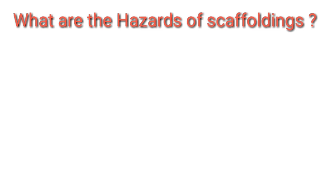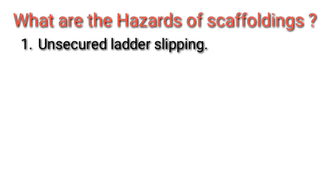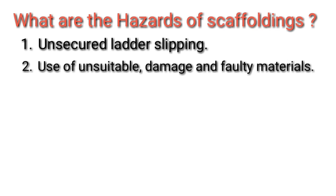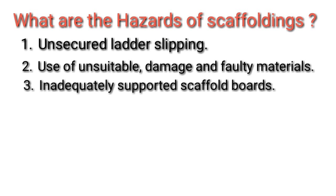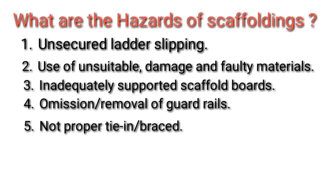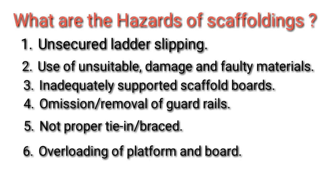What are the hazards of scaffolding? 1. Unsecured ladder slipping. 2. Use of unsuitable, damaged, and faulty materials. 3. Inadequately supported scaffold boards. 4. Omission or removal of guard rails. 5. Not proper tie-in or bracing. 6. Overloading of platform and board.